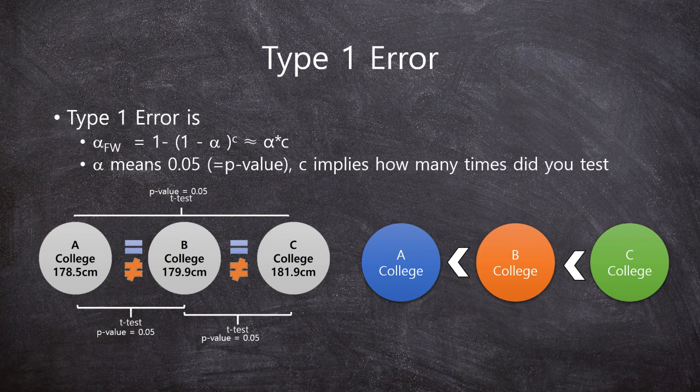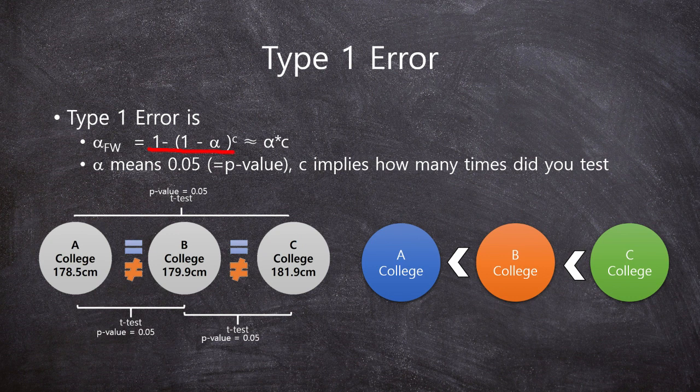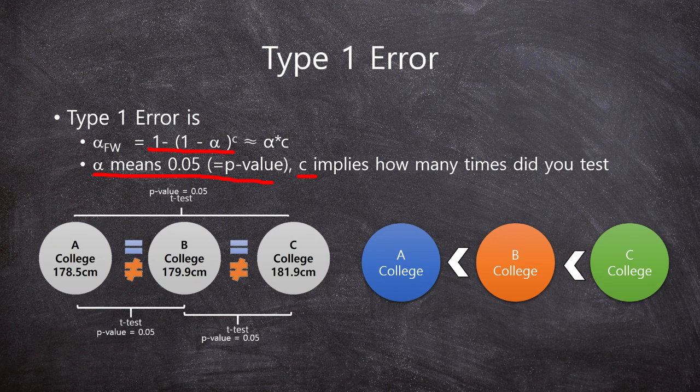The exact formula is here. It looks very complicated. Here, alpha means 0.05 p-value, and the C implies how many times did you test? In this case, we did 3 times, right? 1, 2, 3.